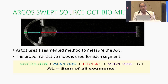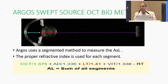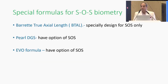Another new tool in the market is the Argos swept-source OCT biometer. What is unique about it is the sum-of-all-segments approach. It uses a segmented method for each part of the axial length, because different structures have different refractive indices. The Argos measures axial length specifically for each segment of the eye, and the axial length becomes the sum of all segments, or SOS. Special formulas for this biometer include the Barret true axial length, or BTL, specifically designed for SOS, as well as PEARL, DGS, and EVO formulas.